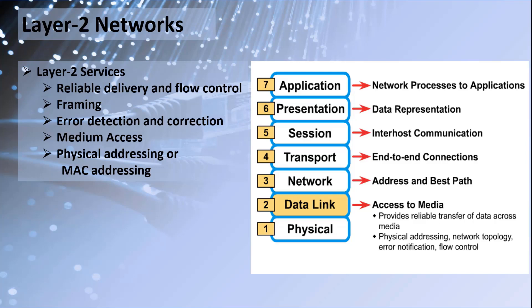It's very important to understand encapsulation and decapsulation, as that forms an important part of the data link layer. Layer 2 uses frames as data units, wherein packets received from the network layer are encapsulated into frames — which includes the addition of source and destination MAC addresses. At the source, Layer 3 packets are encapsulated and MAC addresses are added.